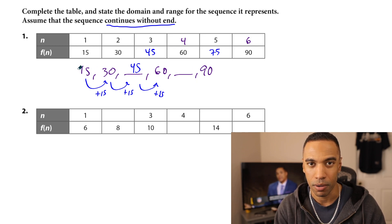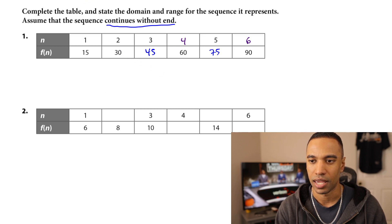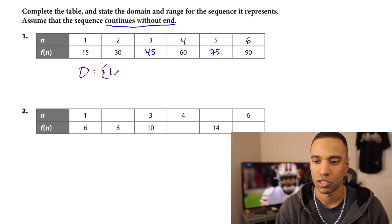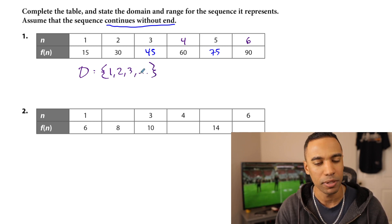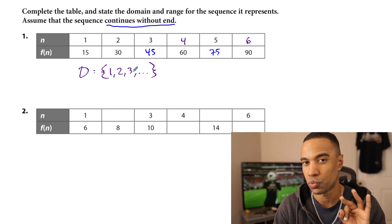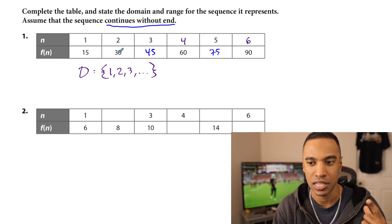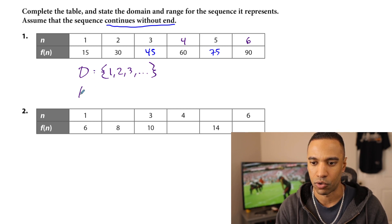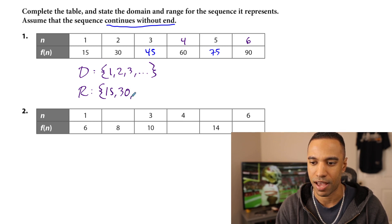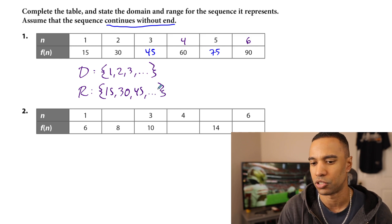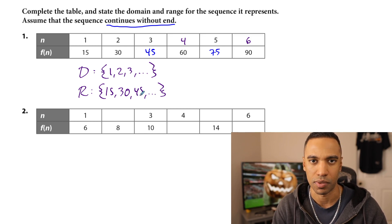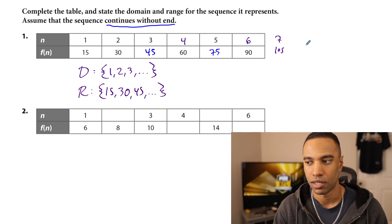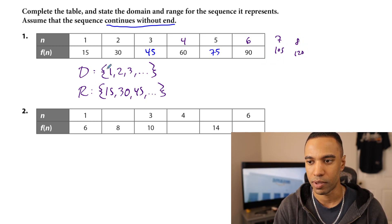This is their actual appearance in table form. Now state the domain and range — assume it continues without end. For domain, this goes 1, 2, 3, et cetera. I need at least three numbers, because just like the last set this could have been 15, 30, 60 or 15, 30, 45 — we didn't know until we saw the third or fourth number. The range as it appears is 15, 30, 45, and so on — everything's adding 15. There should be a seventh term of 105, an eighth of 120, and so on.